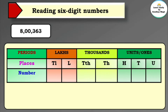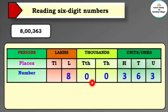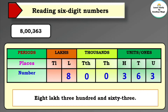Let's write this number according to its places: eight is in the lakhs place, zero is in the ten thousands place, zero is in the thousands place, three is in the hundreds place, six is in the tens place, and three is in the units place. Now read this number: eight lakh three hundred and sixty-three.